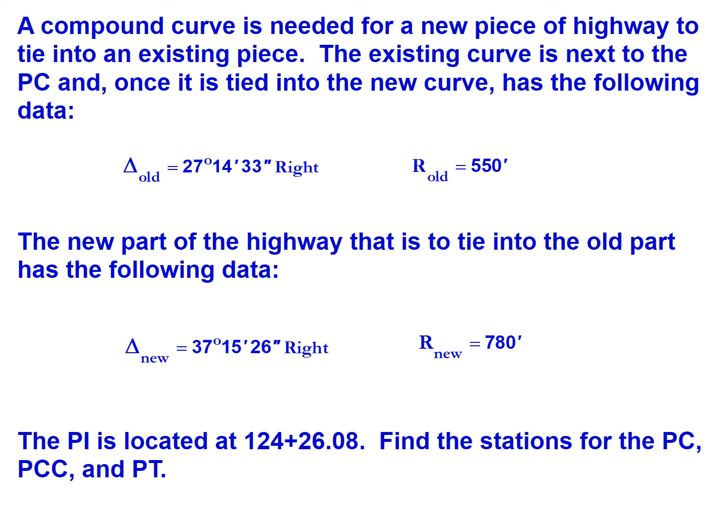The PI is located at station 124 plus 26.08, and we're asked to find the stations for the PC, the PCC, and the PT.